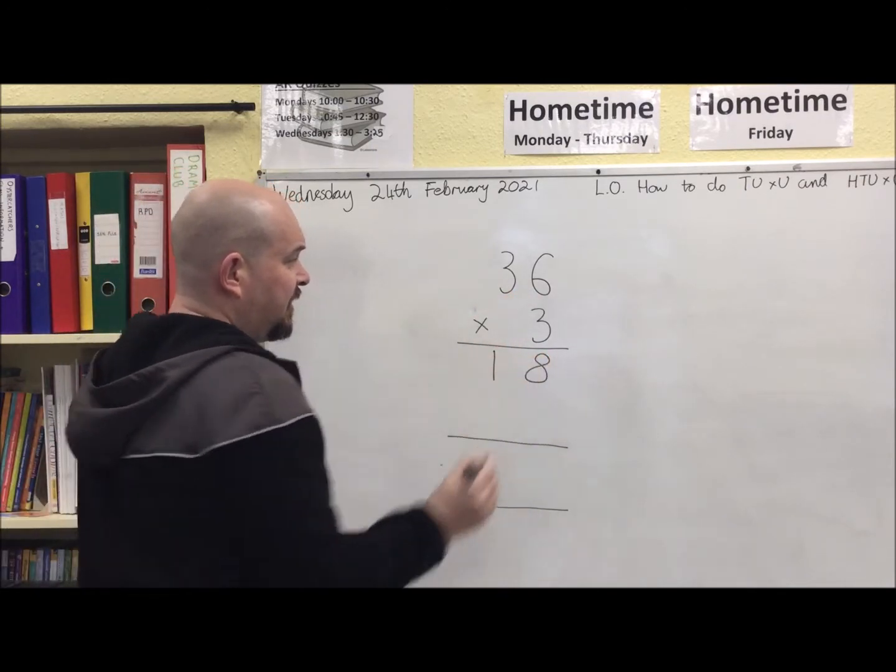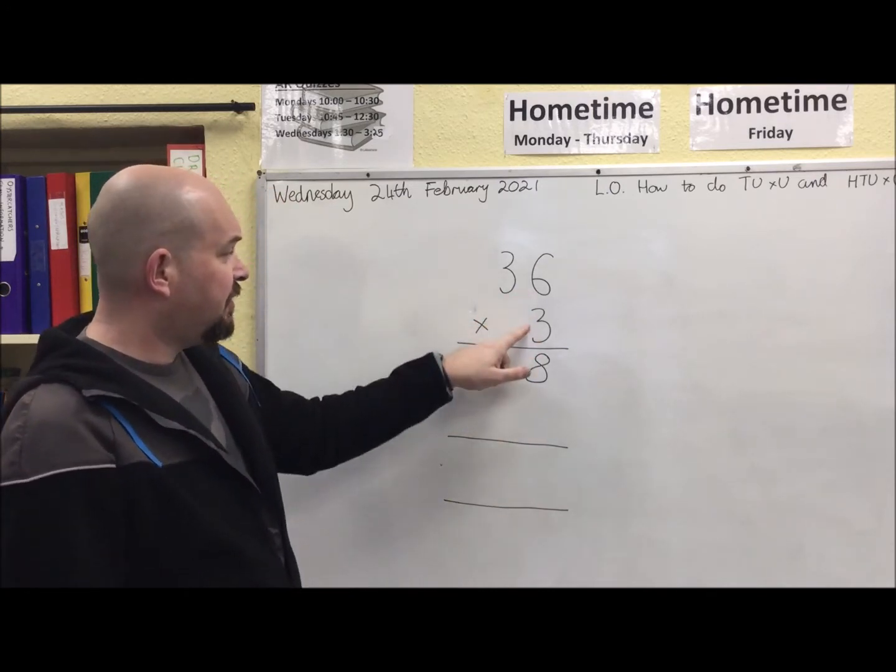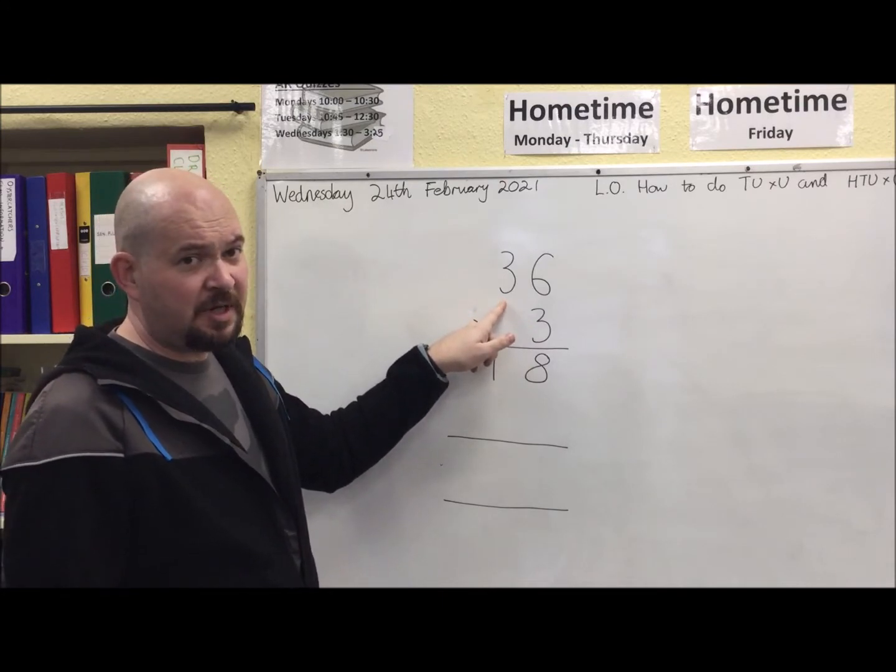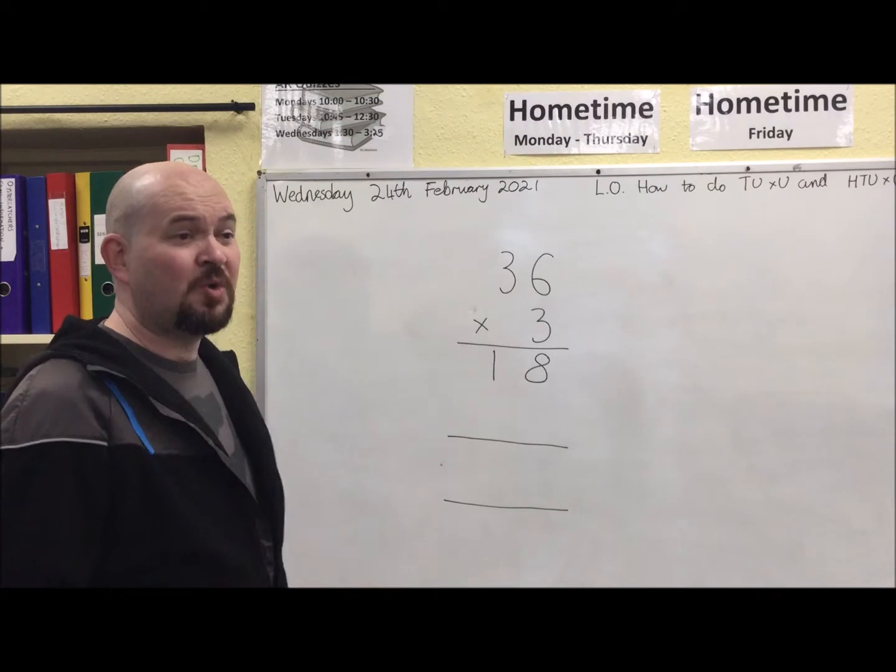Making sure that the tens are lined up with the tens and the ones are lined up with the ones. 3 times 3, I know it's 9, but it's actually 30, don't forget. So it's 3 times 30, which is 90.